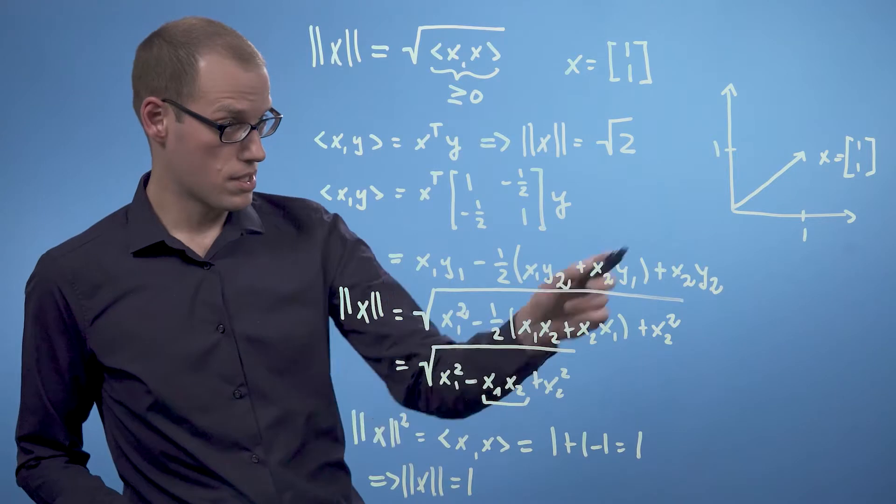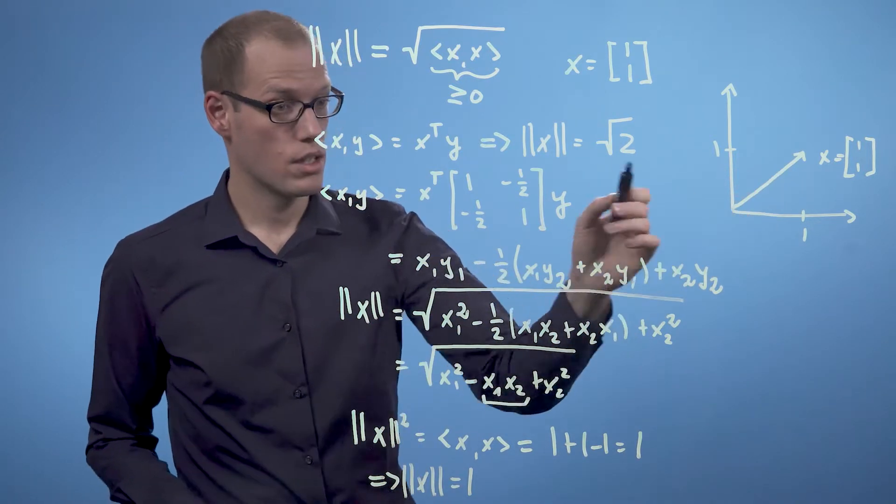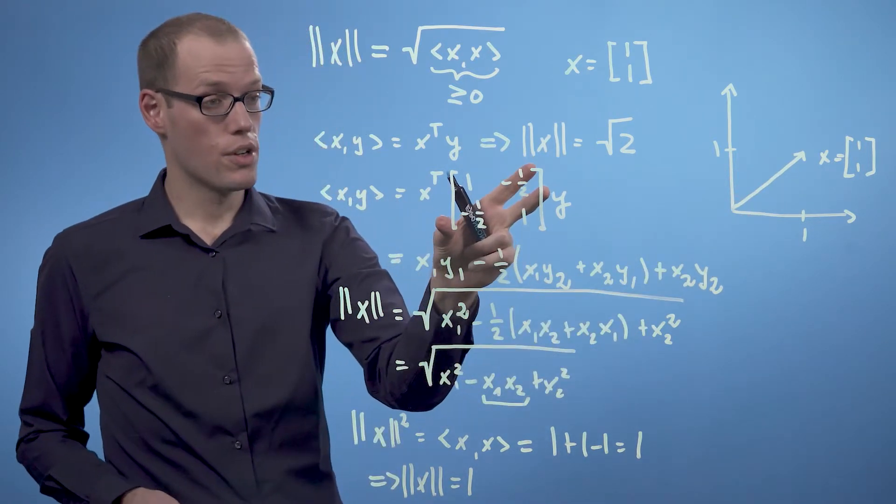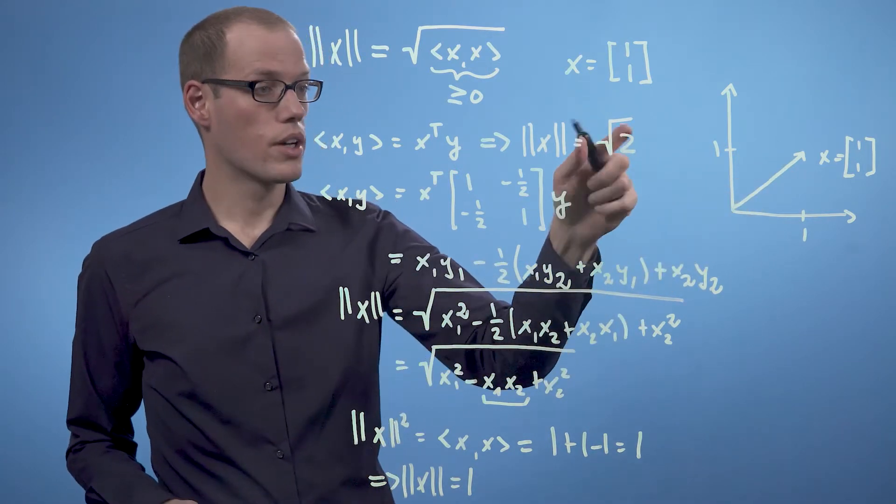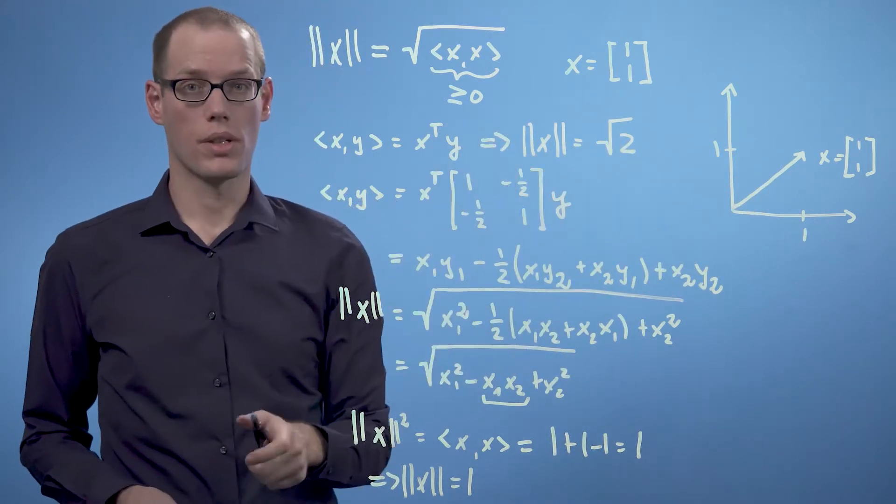And therefore, the norm of x is just 1. And 1, in this case, would be the length of the vector using this unusual definition of an inner product, whereas the same vector would be longer had we used the dot product up here.